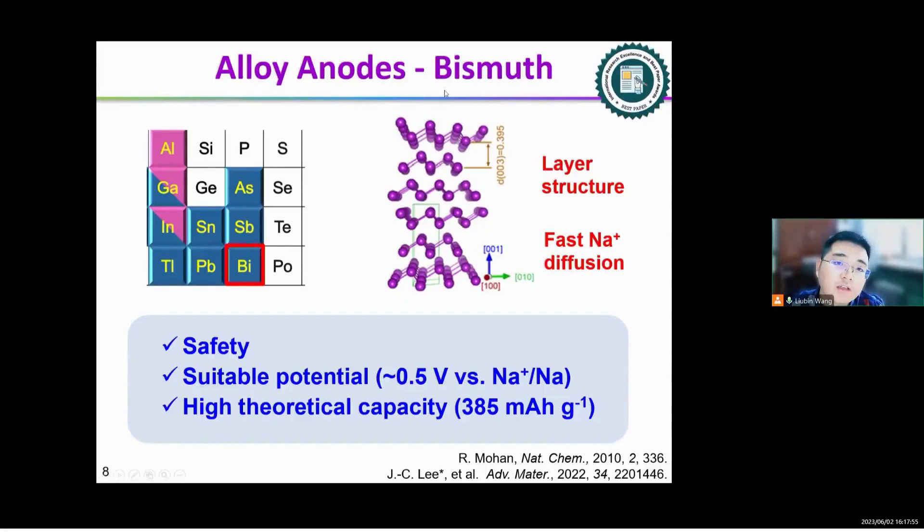The first alloying type anode in our research is bismuth. Bismuth, as we know, is a Group 15 metal. It possesses a layered structure which benefits fast sodium ion diffusion. Besides, the potential of bismuth is around 0.5 volts, which is a safety potential, and the theoretical capacity is around 385 milliampere hour per gram.